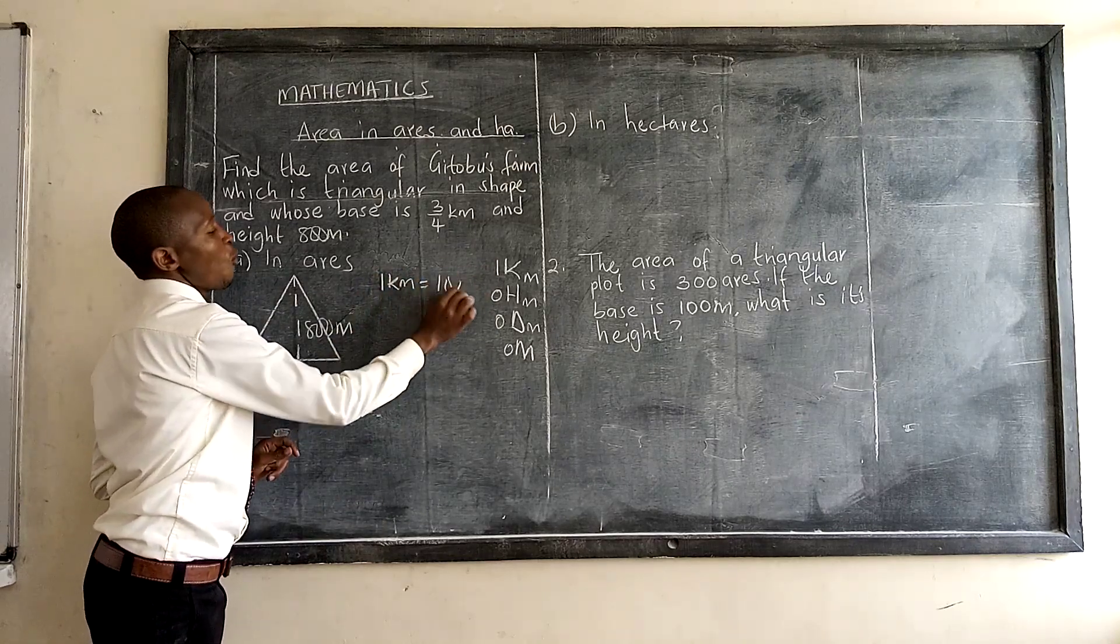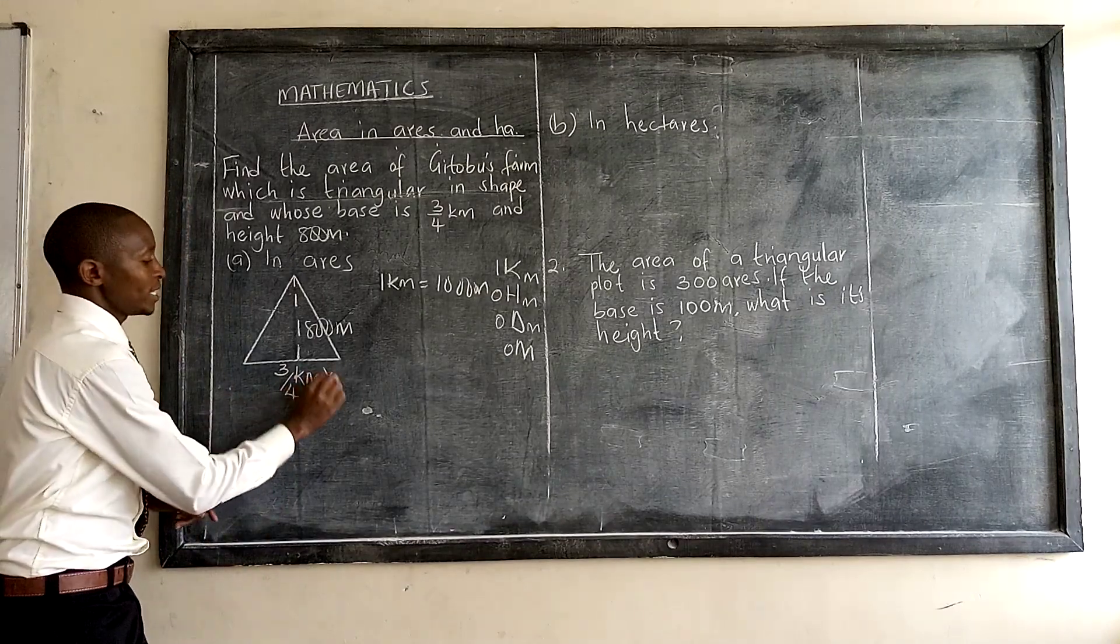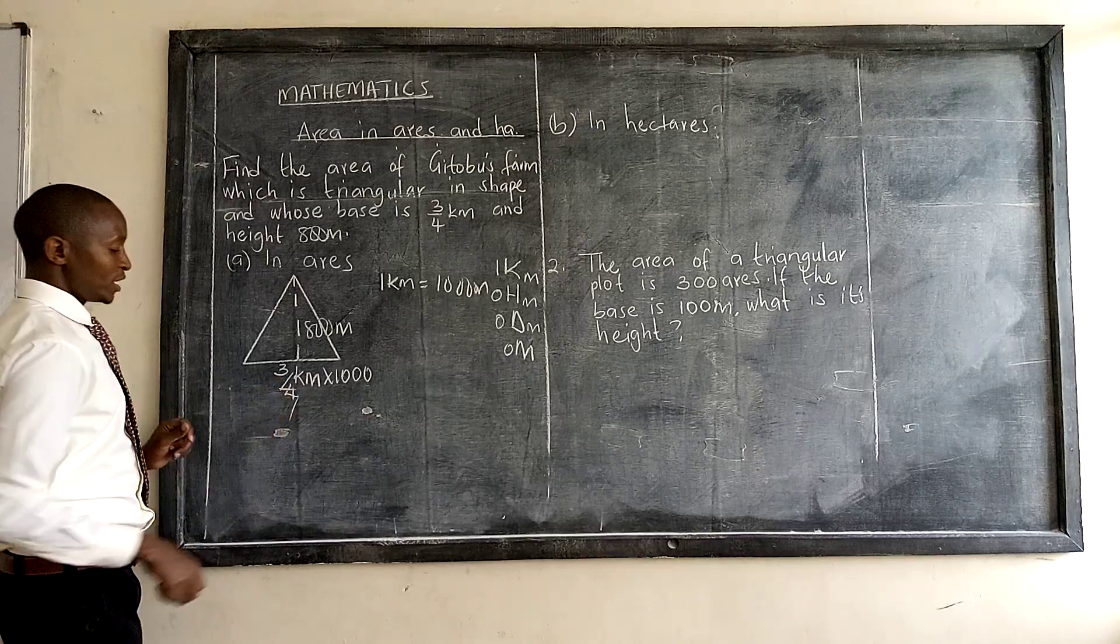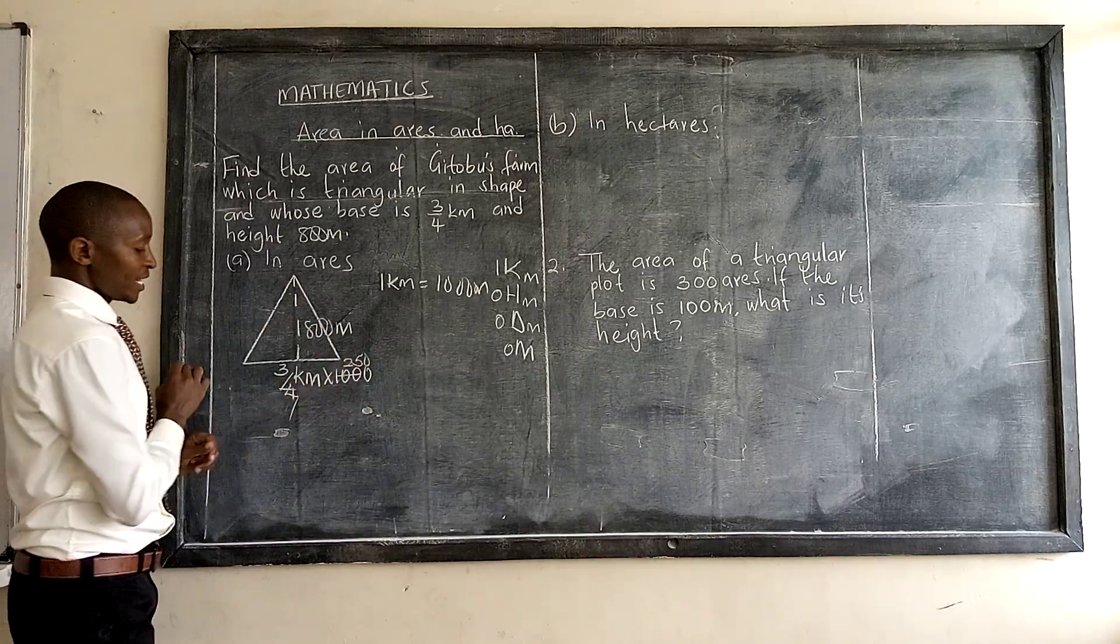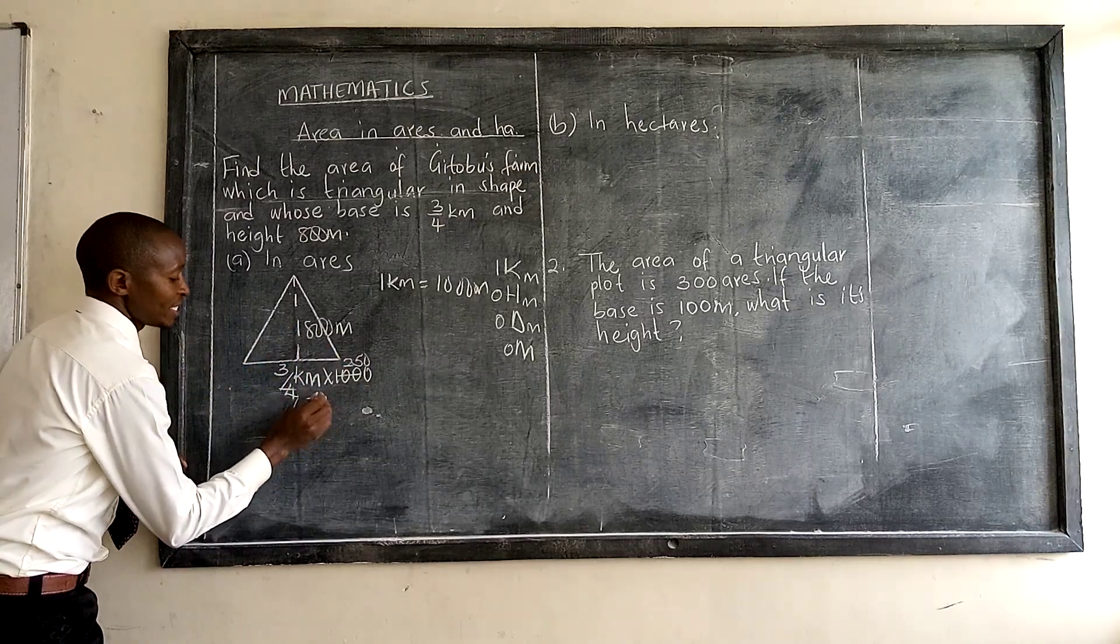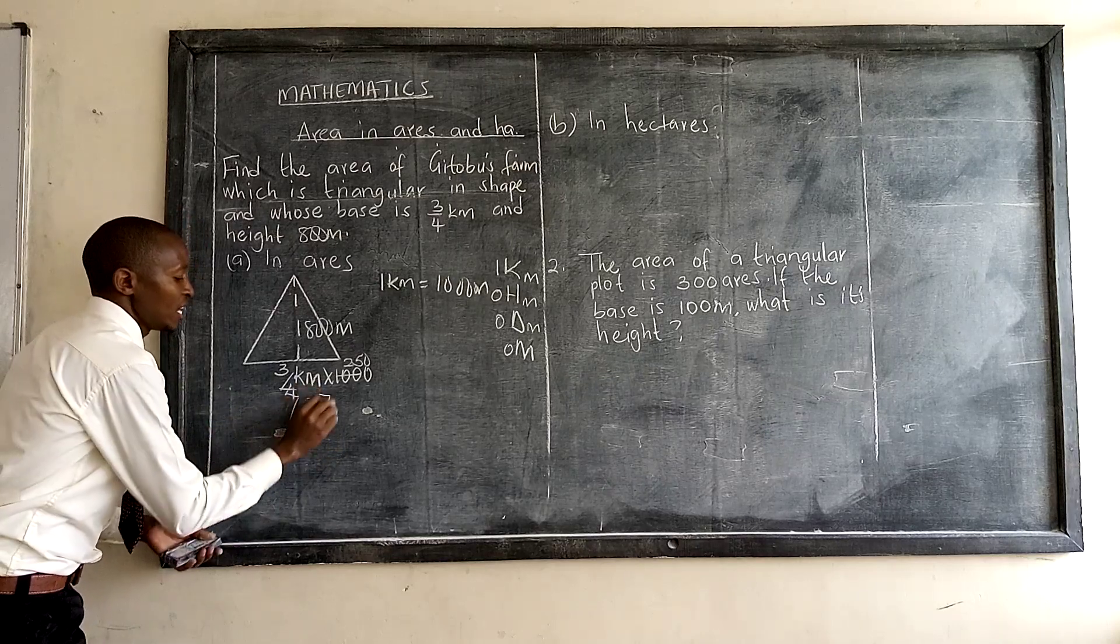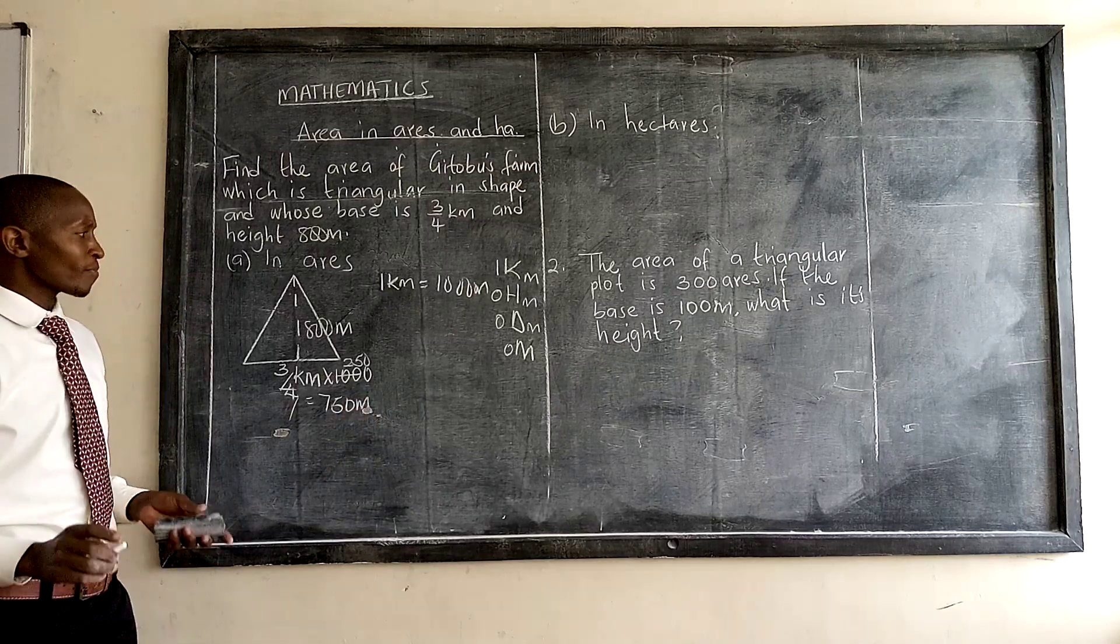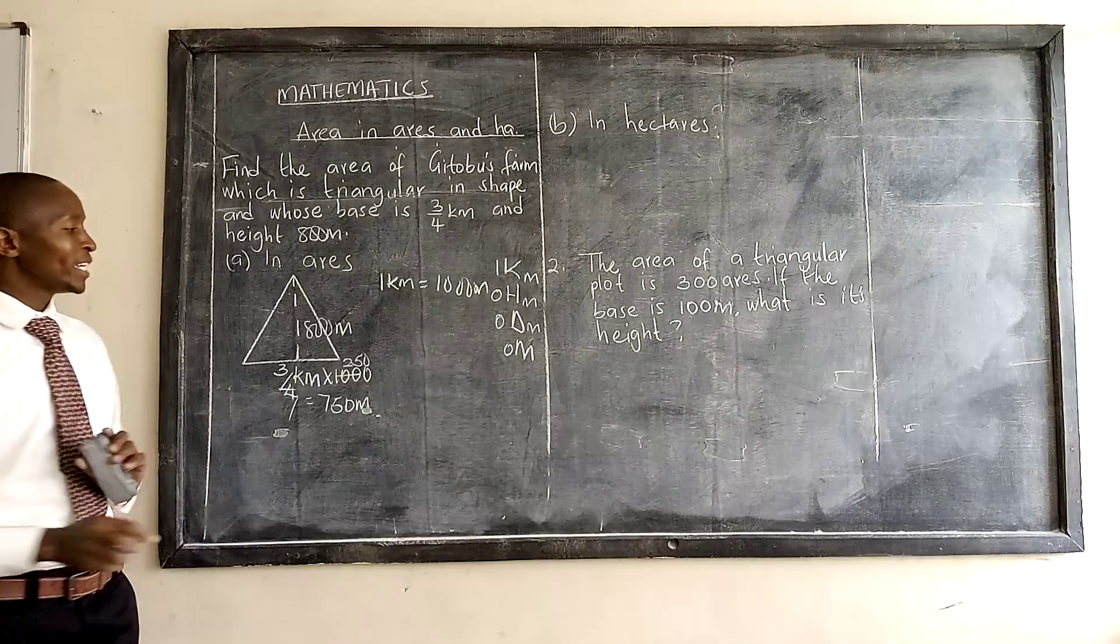...is equal to one thousand meters. Change this: we simply multiply by one thousand and we simplify by four. One by four, we get 25 and a zero. Three times 250 we get 750 meters.